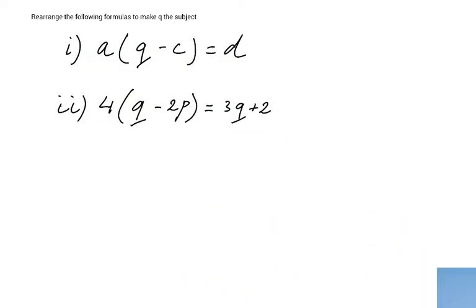All right, so we are changing the subject, a typical exam type of question, and we have to rearrange the formulas to make q the subject. This is the first question: a bracket q minus c bracket equals d. Then the second question will be 4 opening bracket q minus 2p bracket equals 3q plus 2.